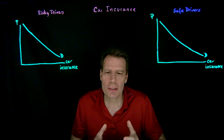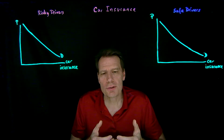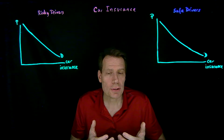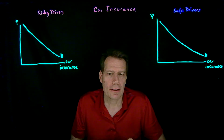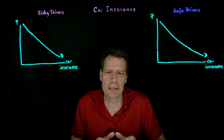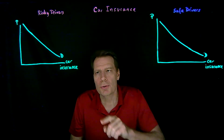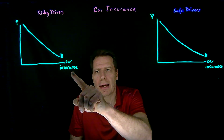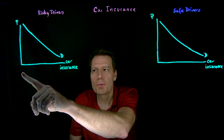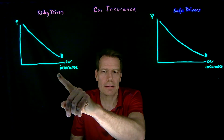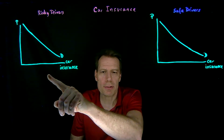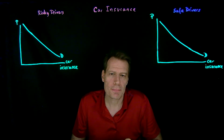We can now ask what the deadweight losses that arise from adverse selection might actually look like. We'll do it with an example — the example of car insurance. On the horizontal axis we have car insurance, and as we move to the right, the car insurance policies become increasingly generous.